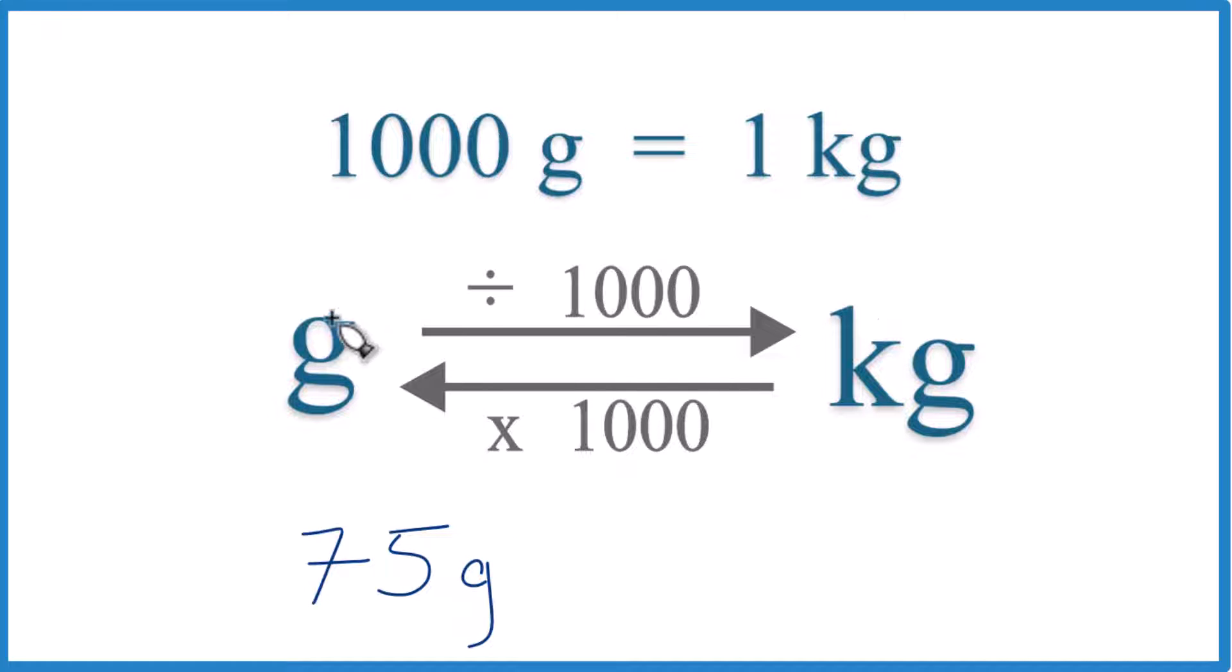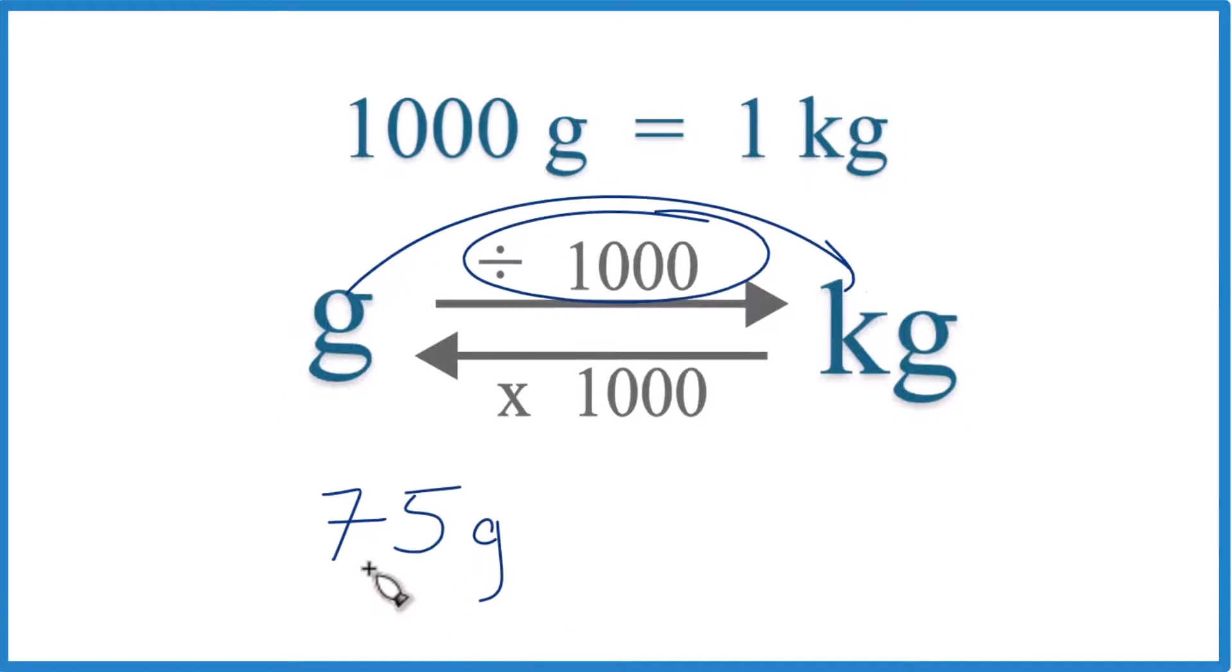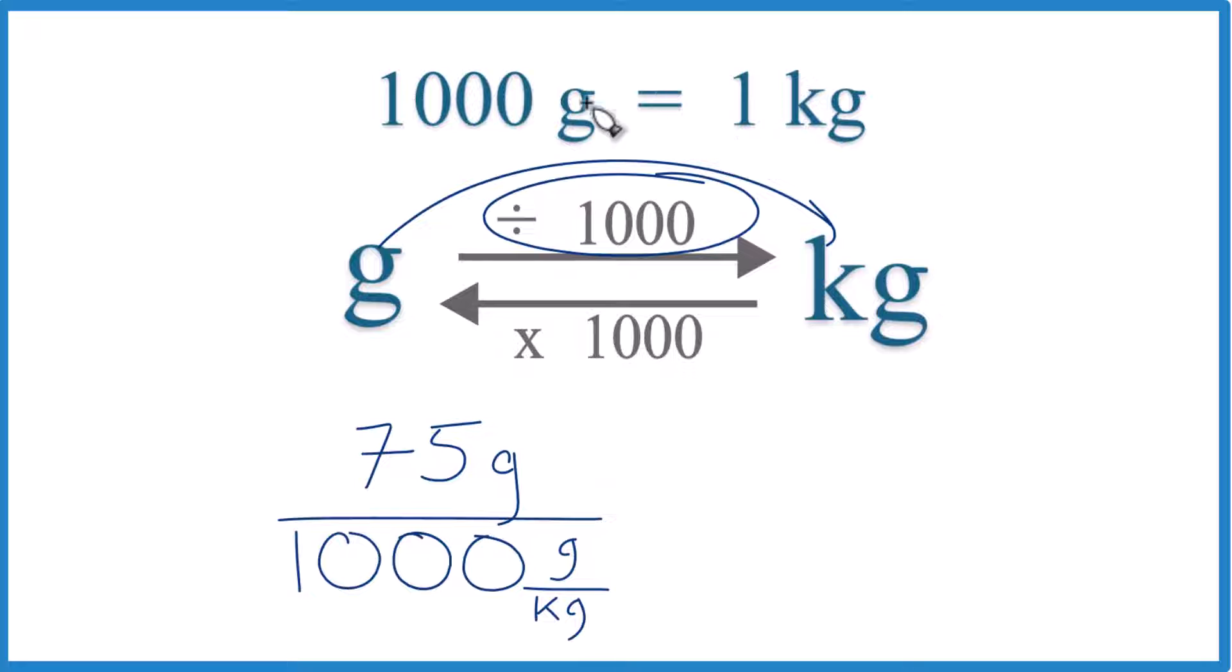So if we're going from grams to kilograms, we just divide by 1,000. So we're gonna divide 75 grams by 1,000. And note that that's 1,000 grams in one kilogram. So we have 1,000 grams per kilogram.